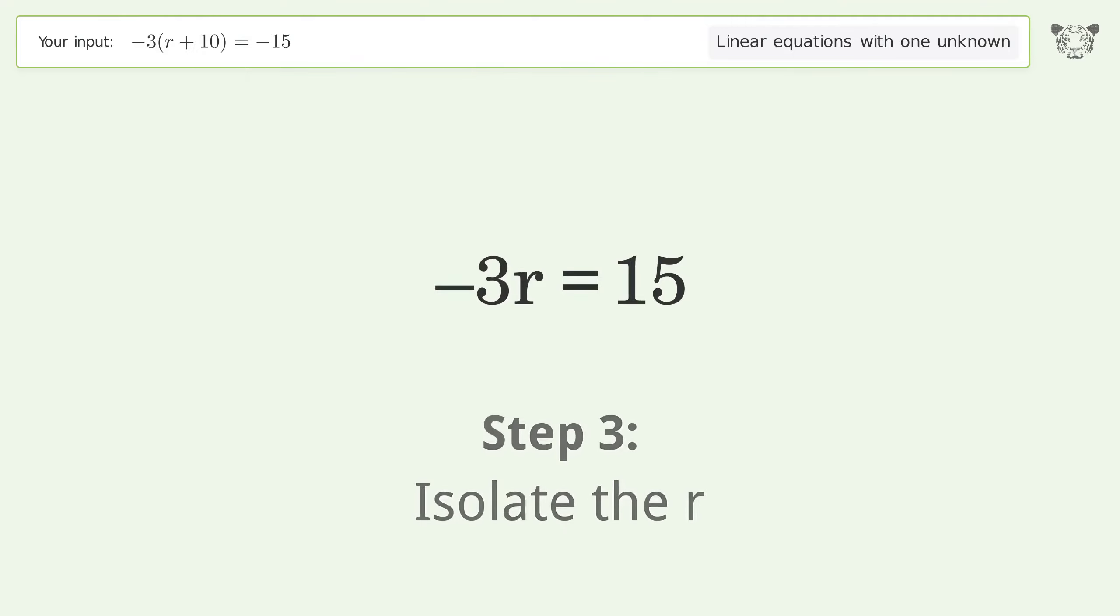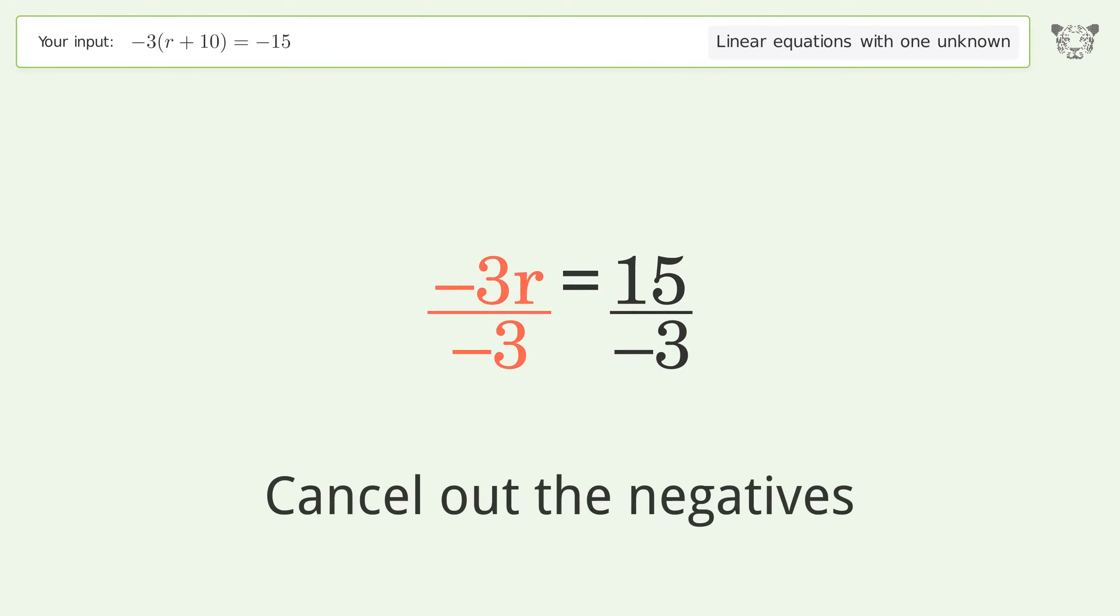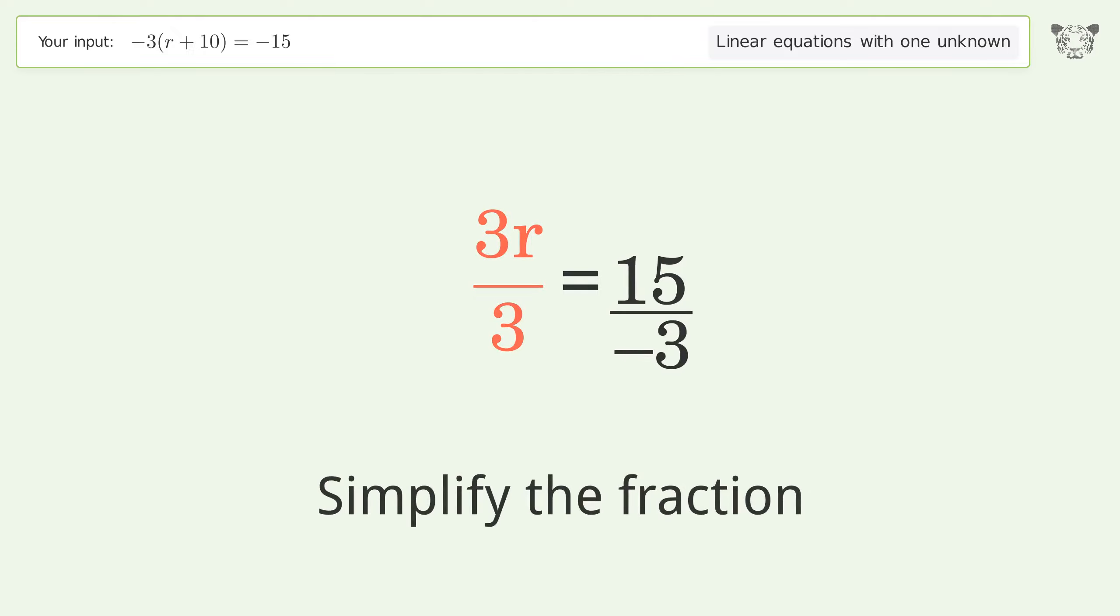Isolate the r. Divide both sides by negative 3. Cancel out the negatives. Simplify the fraction.